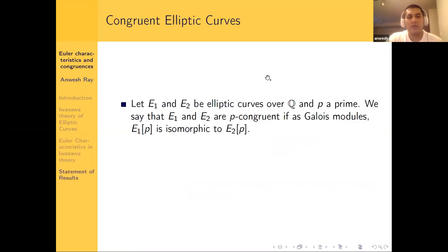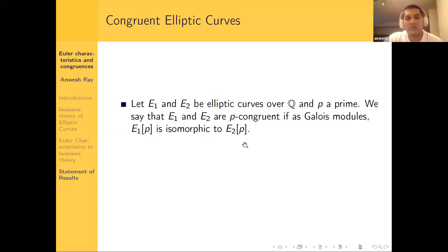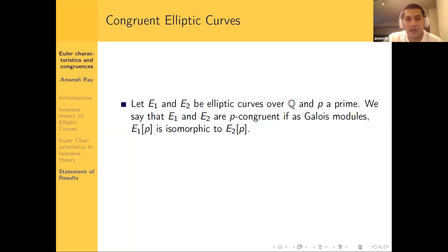I now want to talk about the notion of congruence of two elliptic curves and state some of the results. Any elliptic curve gives rise to a p-adic Galois representation on the Tate module. Two elliptic curves E1 and E2 are p-congruent if these p-adic Galois representations are congruent mod P — more concretely, if E1[P] and E2[P] (each a two-dimensional F_P vector space) are isomorphic as Galois modules. So they are close to each other p-adically in this Galois-theoretic sense.